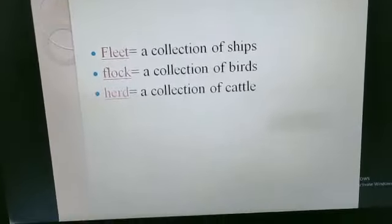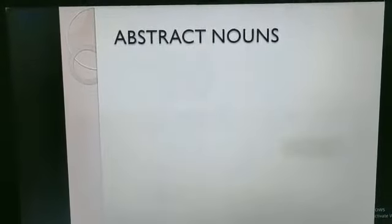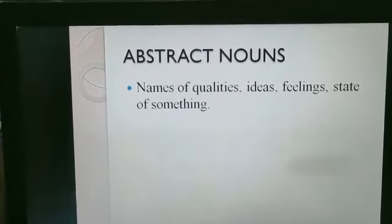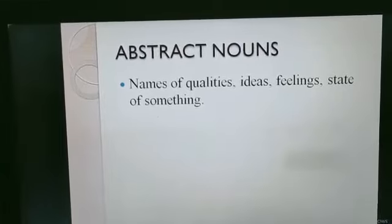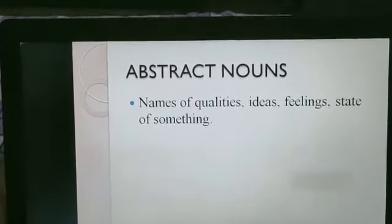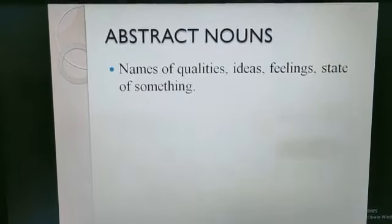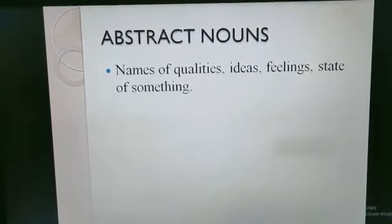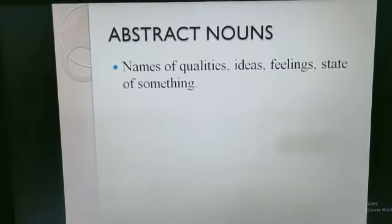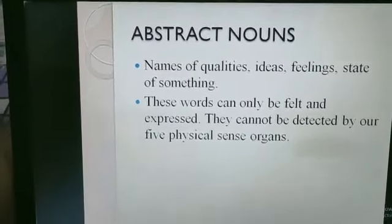Let us move on to the other type of noun, that is abstract nouns. What are abstract nouns? First of all, the word 'abstract' means something which can only be felt and cannot be perceived or detected by our five physical sense organs. Abstract nouns are names of qualities, ideas, feelings, or state of something. These can only be felt.